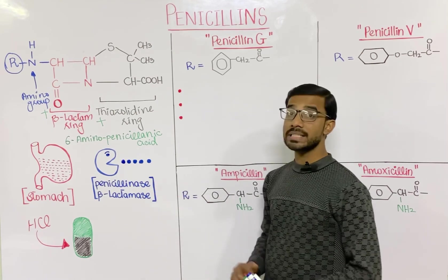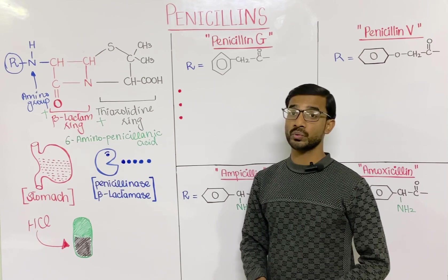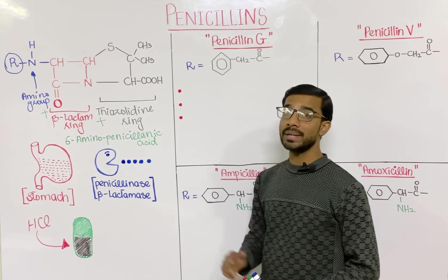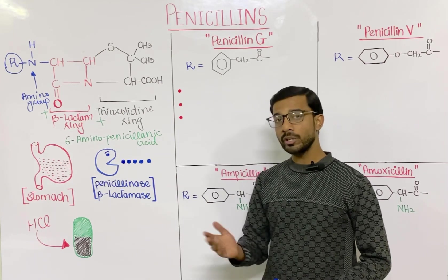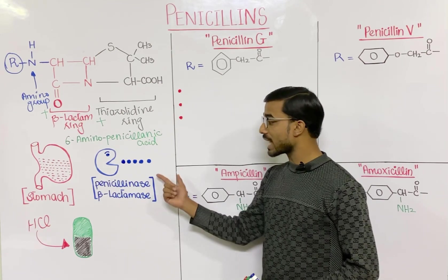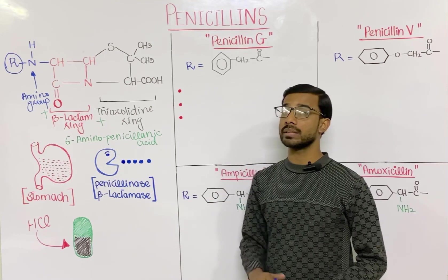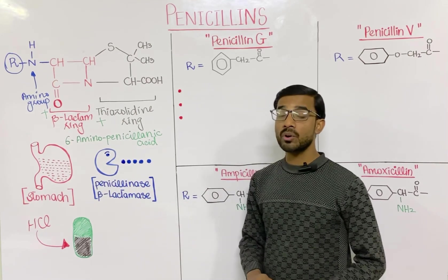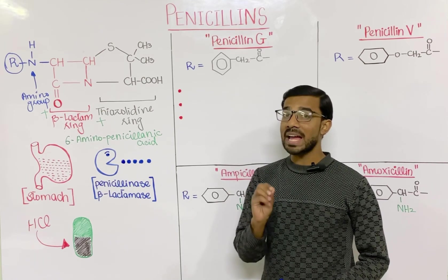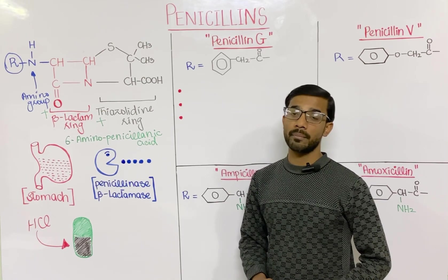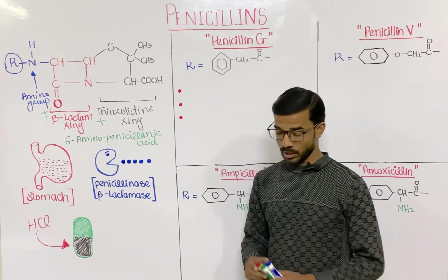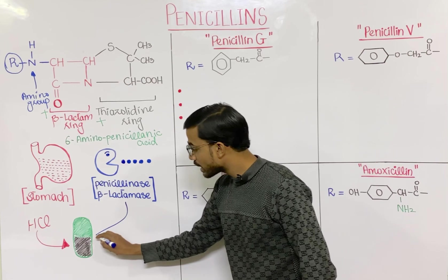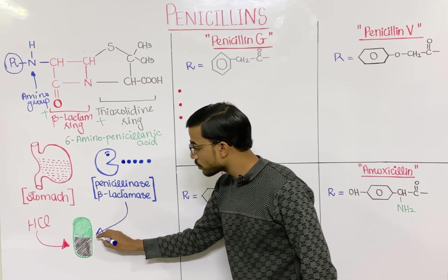The second susceptible component is an enzyme produced by bacteria called penicillinase, or beta-lactamase. We call it penicillinase because that enzyme acts on penicillin, and beta-lactamase because it specifically acts on the beta-lactam ring of penicillin, attacking and destroying it.